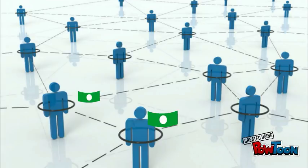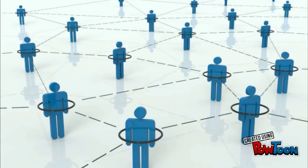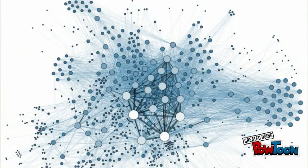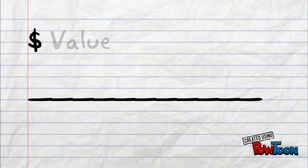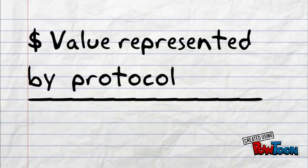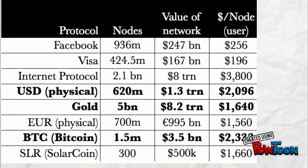Gold, yen, dollars, euros, and bitcoin are all social protocols, using different physical and electronic means to link up users into networks that enable value exchange. We can look at any protocol and calculate both the total network circulating value and the value created per user, or for each node on the network using that protocol.